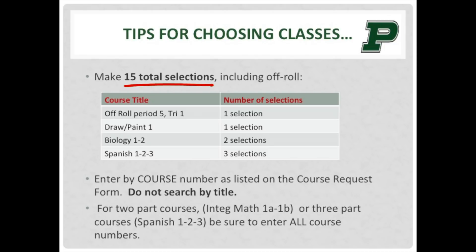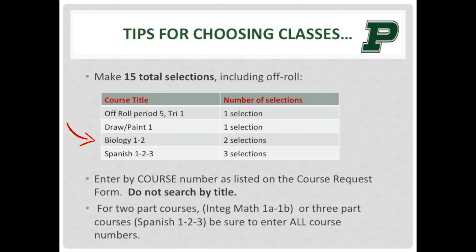You must make 15 selections total to account for the entire school year. Your 15 selections can include off-roll. If you look at the first example, one off-roll in trimester one is one selection. Requesting only Draw and Paint 1 is also one selection. When requesting one year of a science, such as Biology 1 and 2, that would be an example of two selections. It is also possible to request a course sequence that runs three terms, or three trimesters. For example, choosing to take Spanish 1, 2, and 3 would equal three selections.